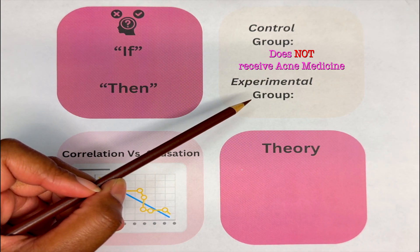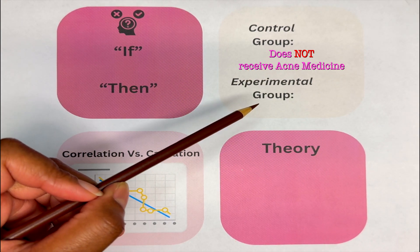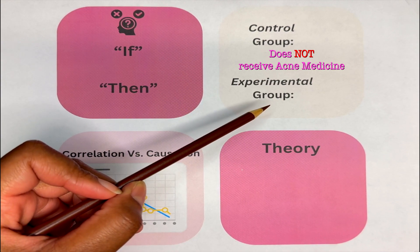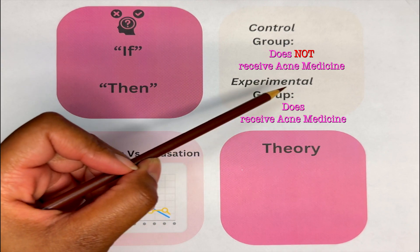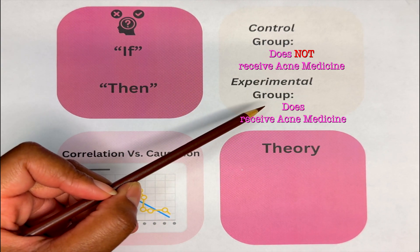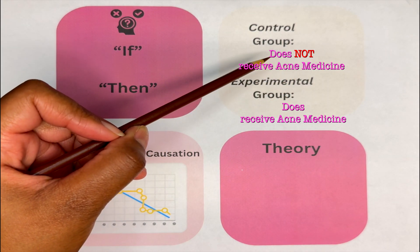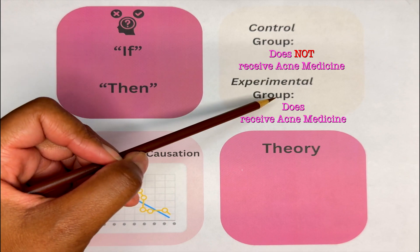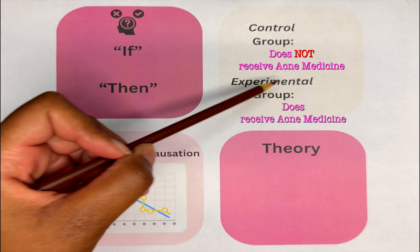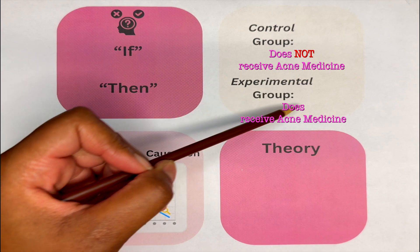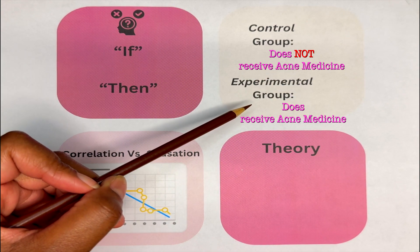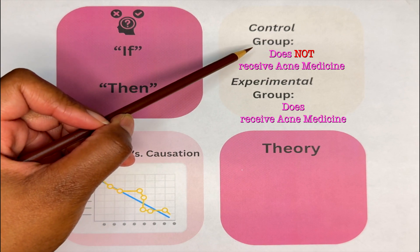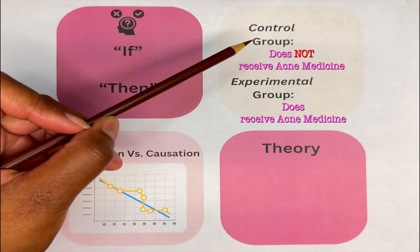The experimental group, as the name says, will be getting experimented on — they receive the acne medication. Both groups share the same factors like sleep and diet, but the main difference is the experimental group receives the factor being tested, while the control group does not.